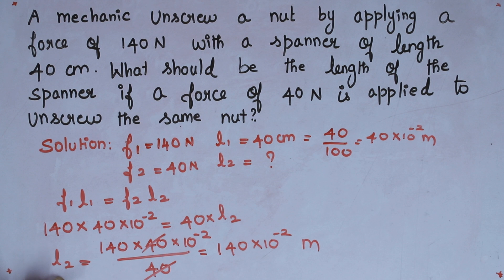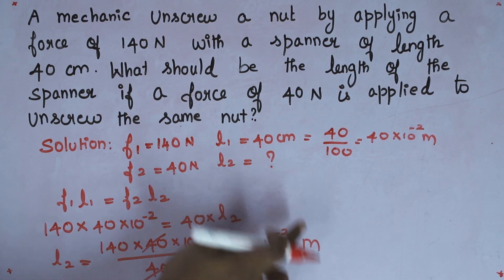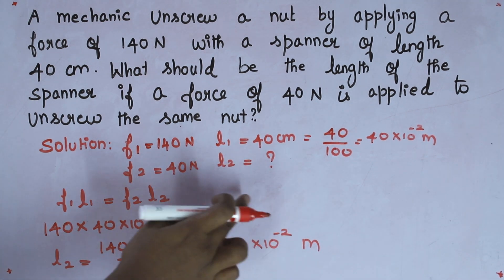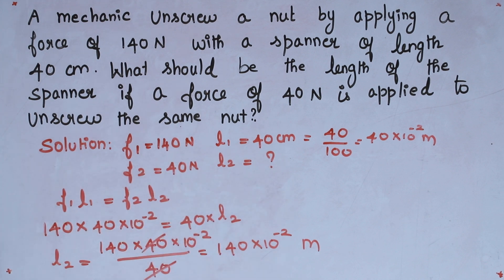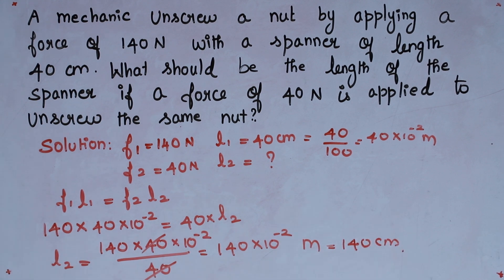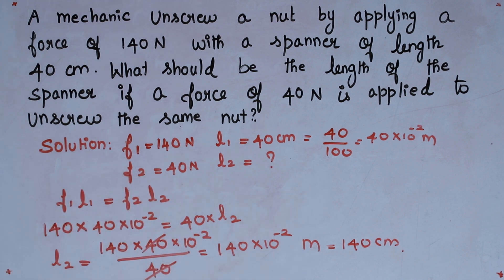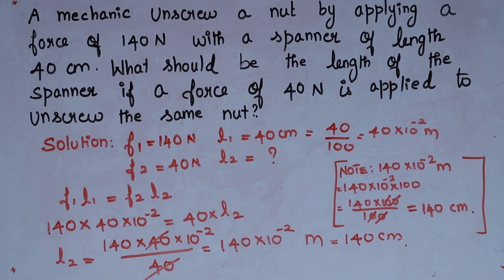Since the question gave values in centimeter, we convert back: multiply by 100 to get 140 centimeter. So when a force of 40 Newton is applied, the length of the spanner will be 140 centimeter. We have successfully completed the first unit of 10th physics. If you have any doubts, comment below and I will clarify. Thank you.